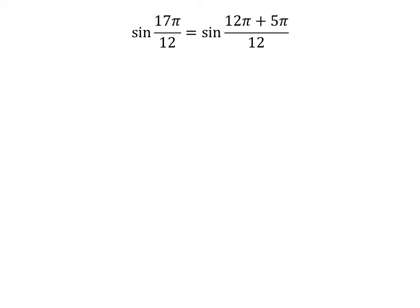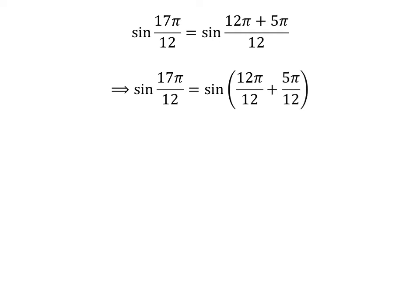17 times pi is equal to 12 times pi plus 5 times pi. So, sine of 17 times pi upon 12 is equal to sine of 12 times pi plus 5 times pi upon 12. The fraction can be expressed as a sum of two fractions, so sine of 17π/12 equals sine of 12π/12 plus 5π/12. Cancelling the common factor gives us sine of 17π/12 is equal to sine of pi plus 5 times pi upon 12.